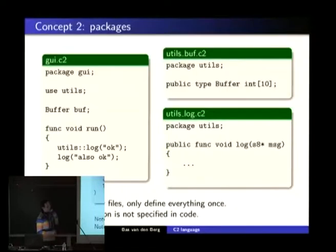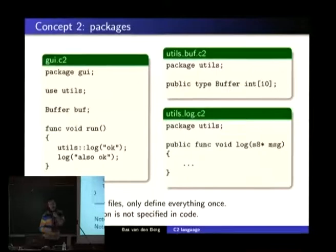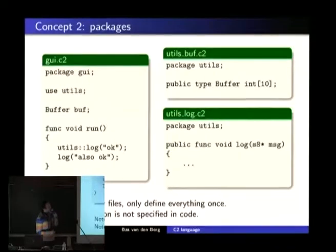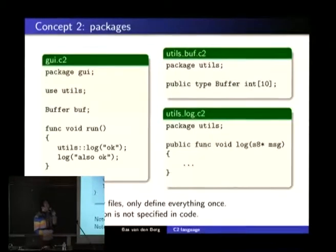If a symbol — a type, function, or variable — doesn't have the 'public' keyword, its scope is within the package. So this file could use it if there's no public keyword and it's in the same utils package, but otherwise it can't. For optimization, we use the same optimization as C's 'static' keyword, so it would be as if this is in one single C file and all the non-public functions are marked static. The compiler knows this is only used here, so it can optimize or inline it.